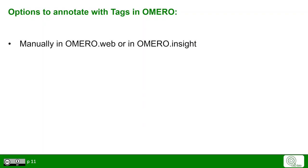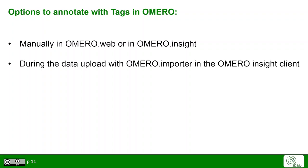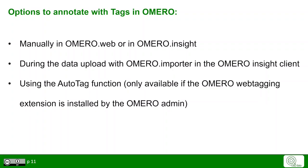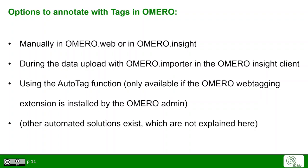With those clear benefits for tagging in Omero, let's see how to annotate with tags. You can do this manually in Omero Web or in Omero Insight. You can do it during the data upload with the Omero Importer, which is part of the Omero Insight client. Or you can use the AutoTag function, which is part of the Omero Web Tagging Extension and must be installed by the Omero admin. There are also other additional solutions, which are not explained in detail here.